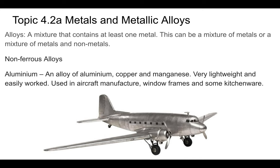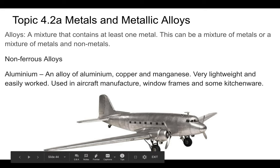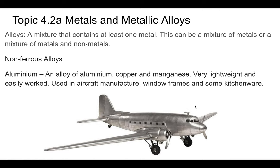Moving into non-ferrous alloys — there are thousands of alloys, so we won't cover all of them. Aluminum alloys, for instance, can be mixed with copper and manganese. The result is lightweight, easily worked, and can be extruded to manufacture strong, lightweight things like airplanes, window frames, and kitchenware.